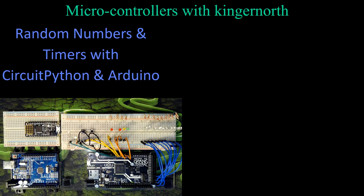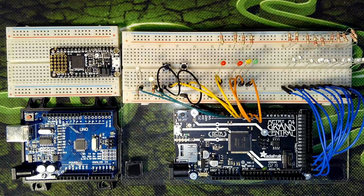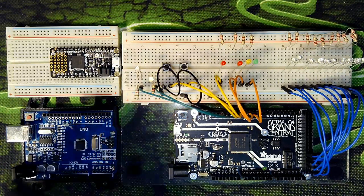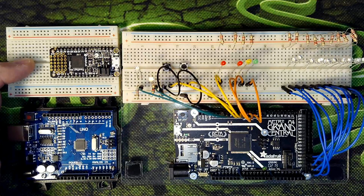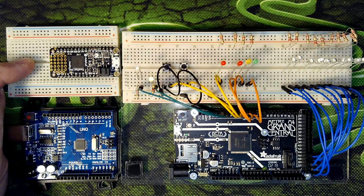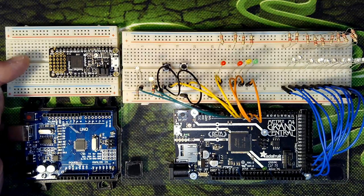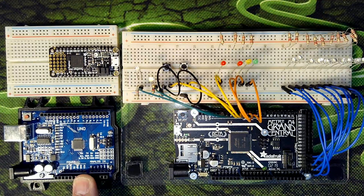We're going to look at a number of boards today — three different boards. I'm going to start with Arduino, then move on to CircuitPython, and then show you a much larger example. Up here in the top left we can see our standard Feather M4 Express from Adafruit. This is our CircuitPython board, which I'll be connecting to for the CircuitPython portion.